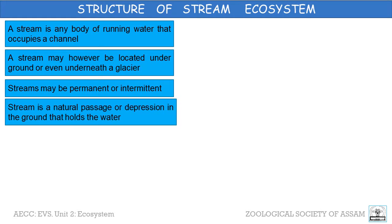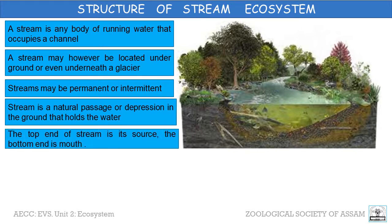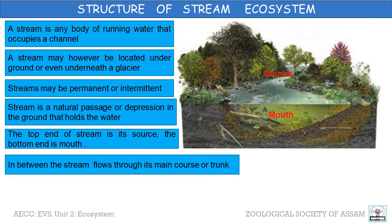The most important part of a stream is its channel or stream bed — the natural patches or depressions in the ground that hold the water, as shown in the figure. Regarding the flow of a stream, the top end where flow begins is its source and the bottom end is its mouth. In between, the stream flows through its main course or trunk.